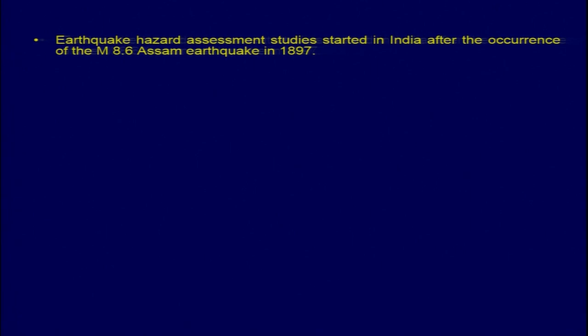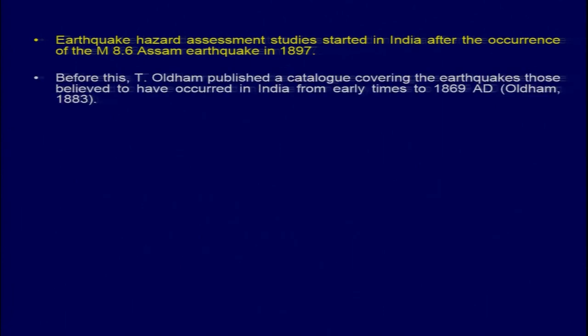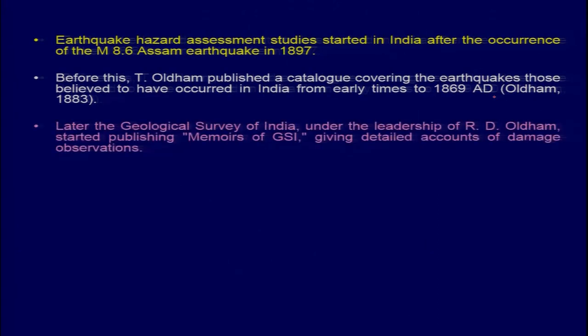Looking at the history of earthquake hazard assessment in India, the study started after the occurrence of the 8.6 magnitude Assam earthquake in 1897, also termed the Shillong Plateau earthquake. Before this, Oldham published a catalogue covering earthquakes believed to have occurred in India from early times to 1869 AD. Later, the Geological Survey of India under the leadership of R.D. Oldham started publishing memoirs of GSI giving detailed accounts of damage observations.